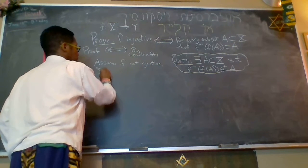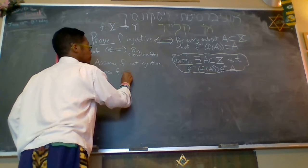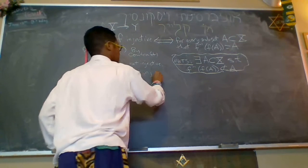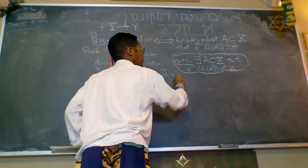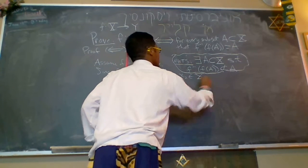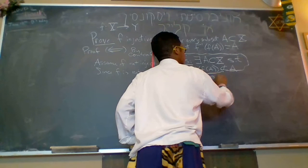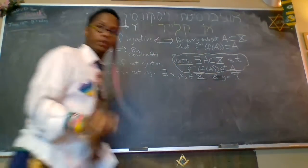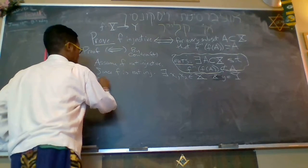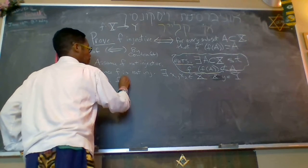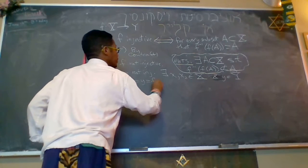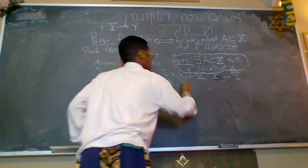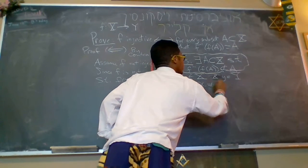f is not injective. Since f is not injective, there exists two elements x1 and x2 in x, such that, and a y in y, such that f of x1 equals y equals f of x2. But x1 not equal to x2.